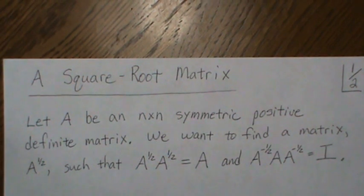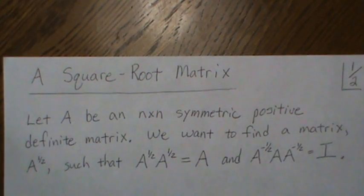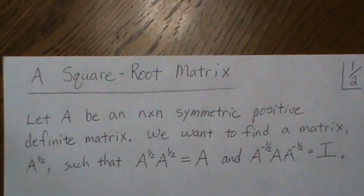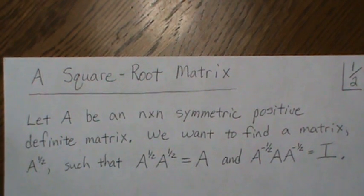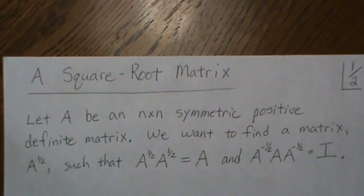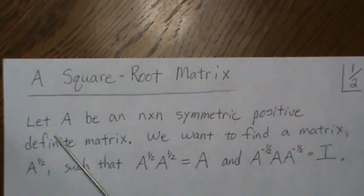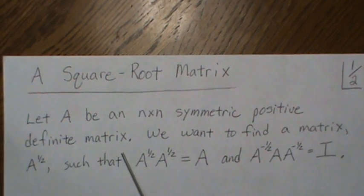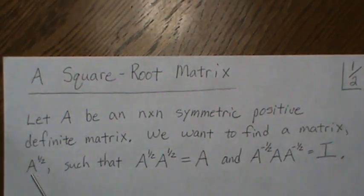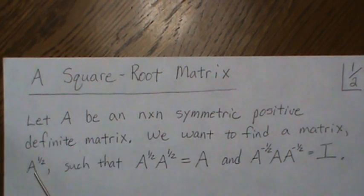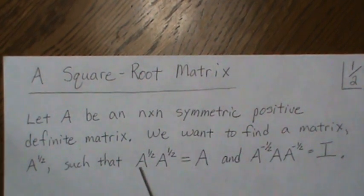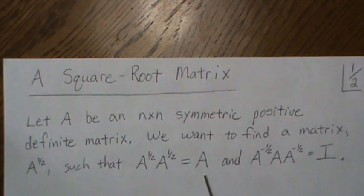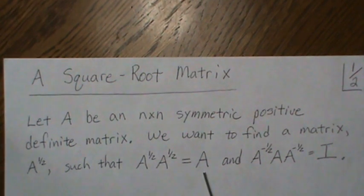And that's what we're trying to do here. We have a matrix A, and then we want to find another matrix such that when we multiply it by itself, we get the original A back. So if we let A be an n-by-n symmetric positive definite matrix, we want to find a matrix — the square root of A, or A to the one-half — such that the product of the square root matrices is equal to the original matrix A.